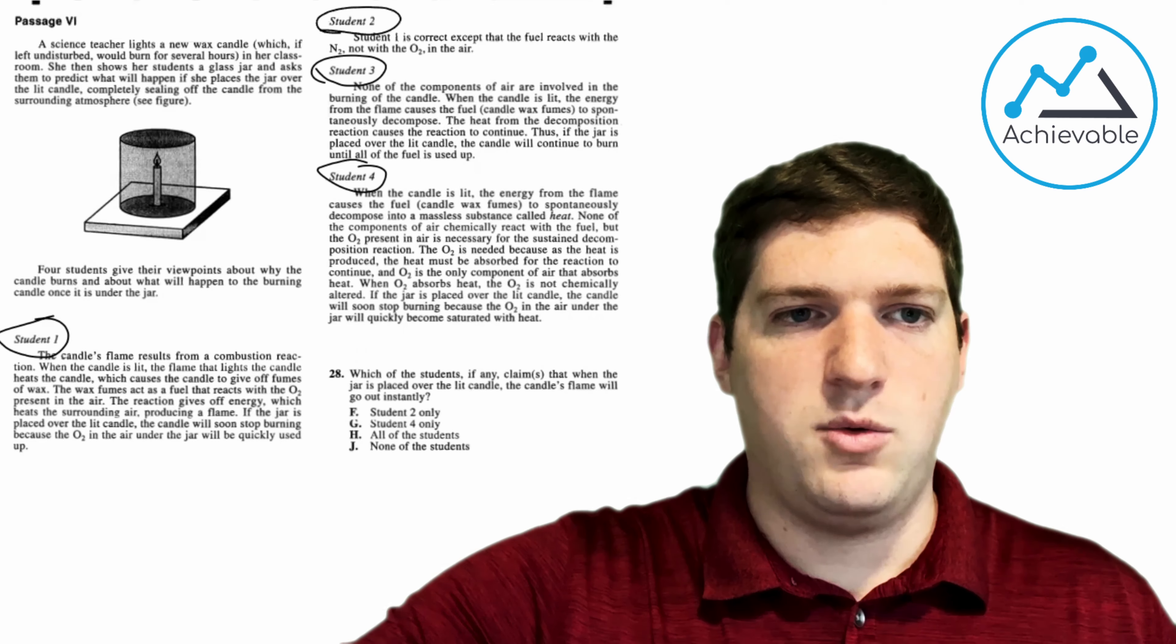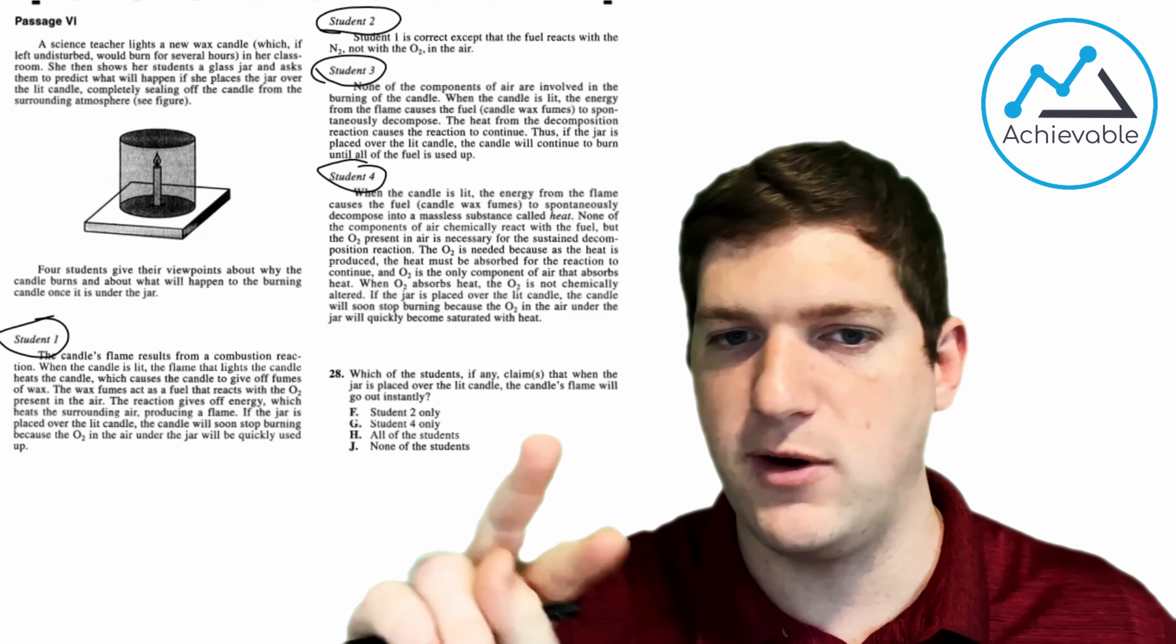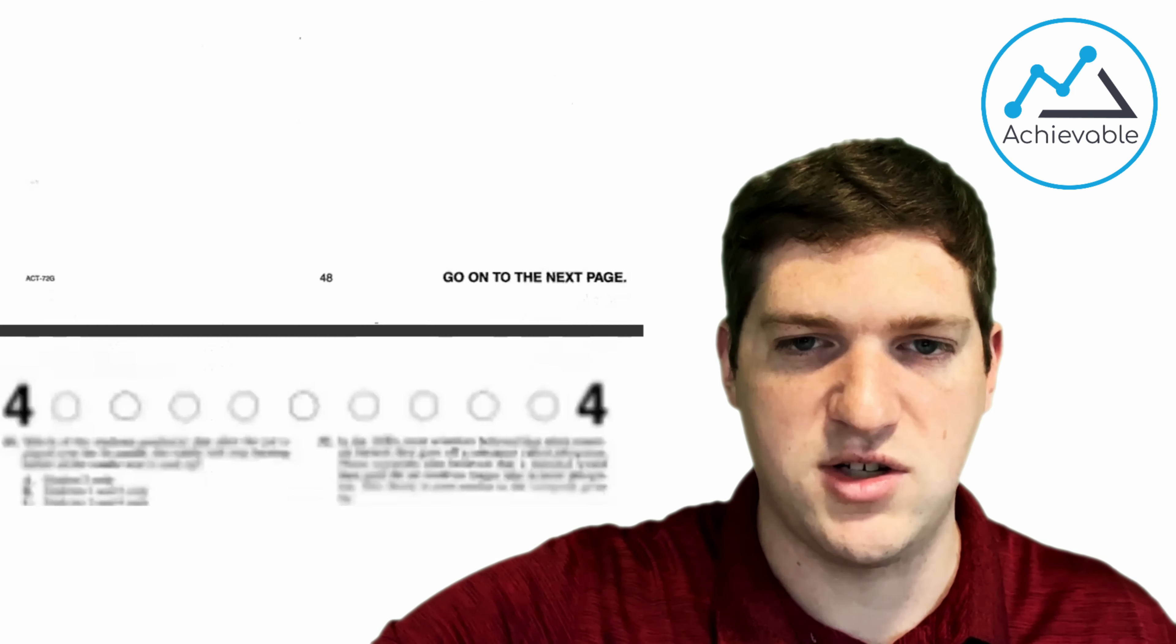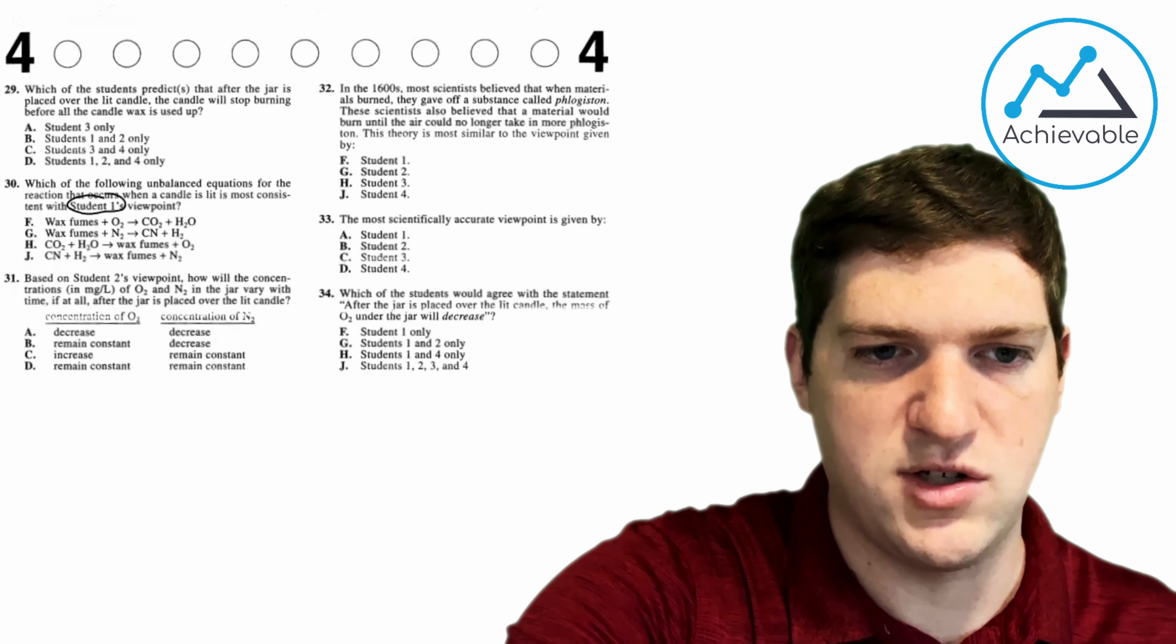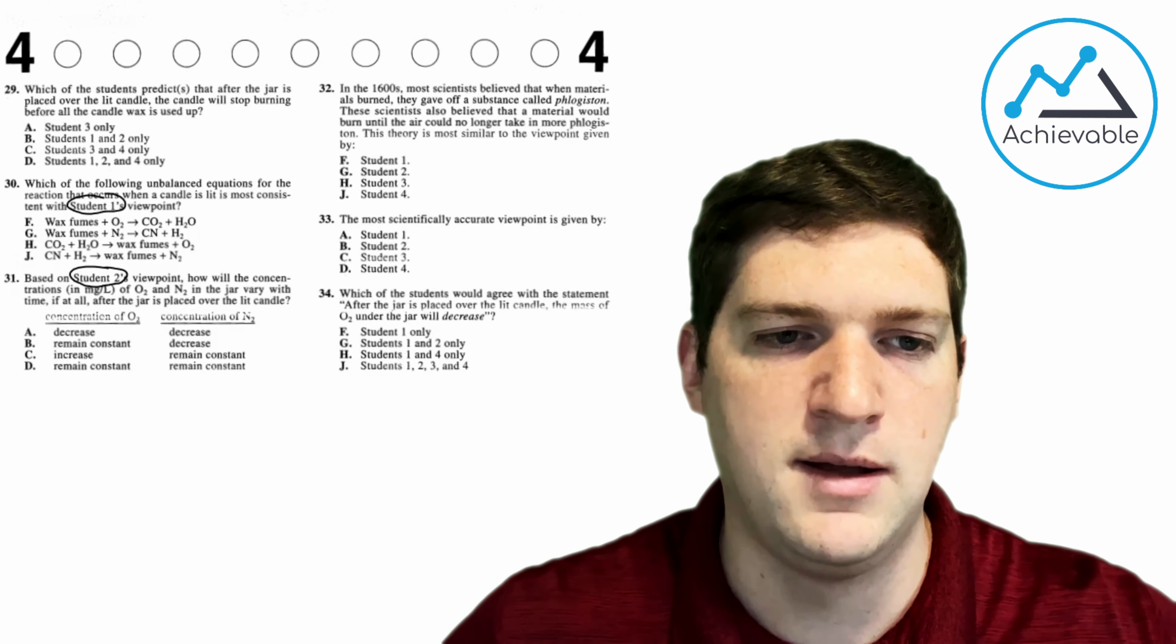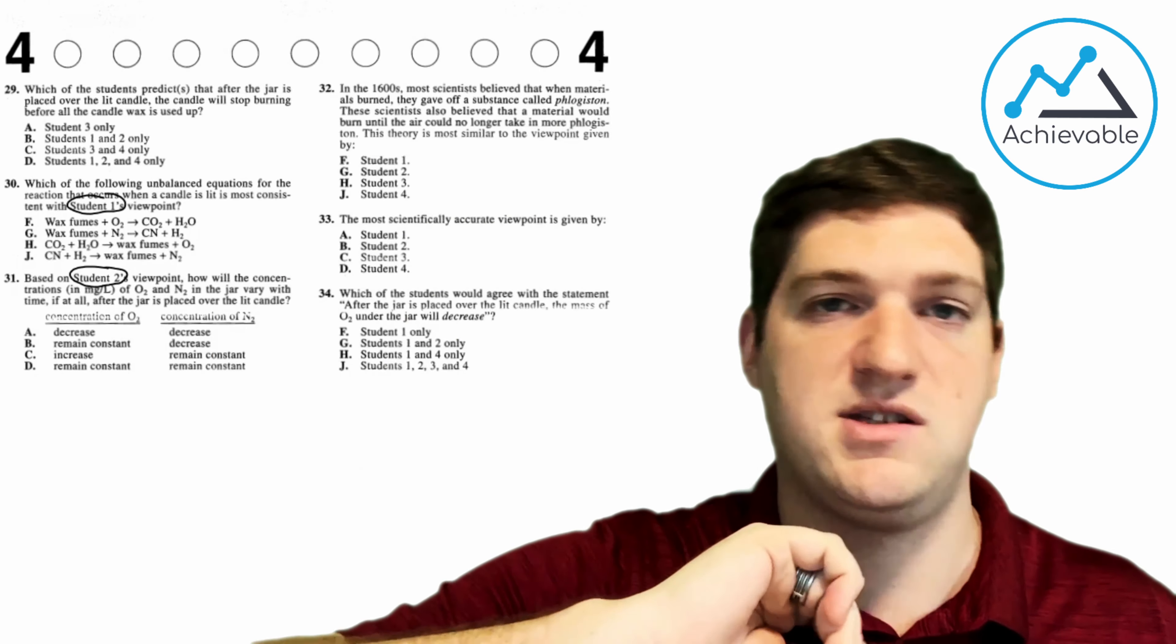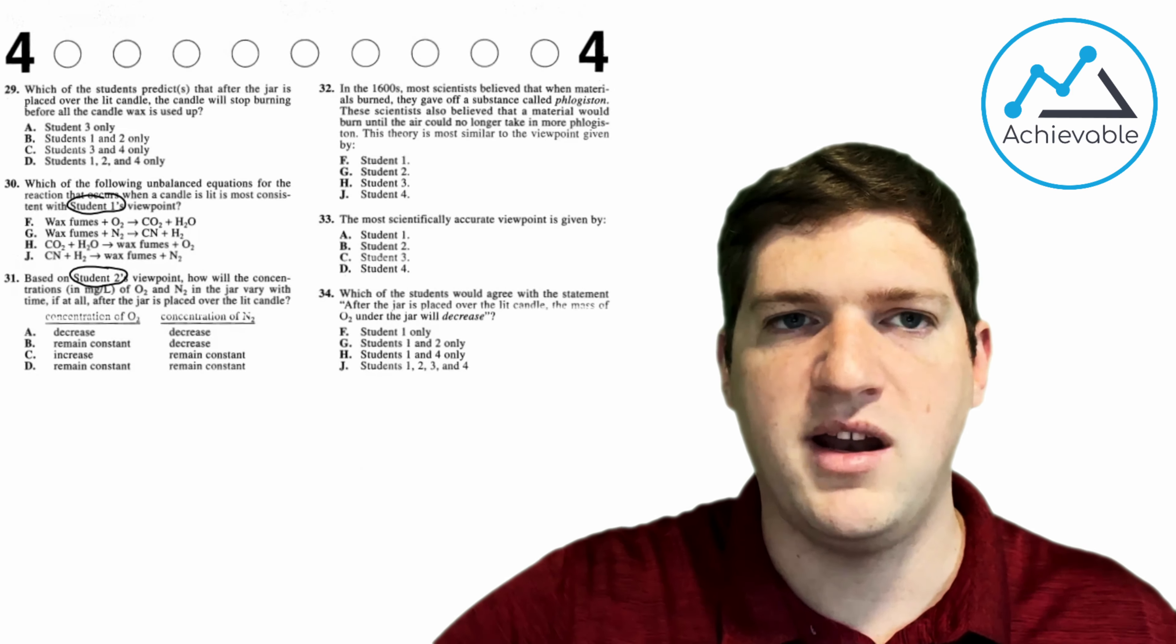The biggest thing with conflicting viewpoints is you don't want to read the whole passage and then try and answer the questions. It's going to be too hard. You're going to forget which student said what, what scientist said this. The best thing to do is read the setup, then read the questions, and go through and circle those location clues. Here we only really have two questions with location clues. Questions 30 and 31 talk about student 1 and student 2, respectively. So what I'm going to do is I'm now going to read student 1's point of view, then come answer this question because it's fresh on my mind. Then I'll go back, read student 2, answer his question because it's on my mind. And then once I've done that, I can read student 3 and 4 and come back and answer the rest of the questions.